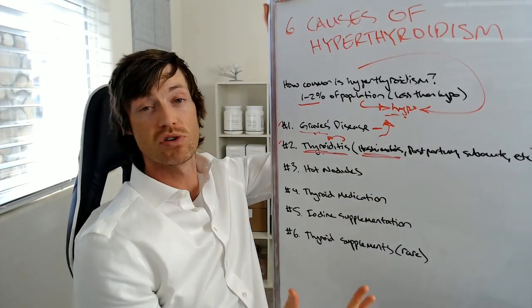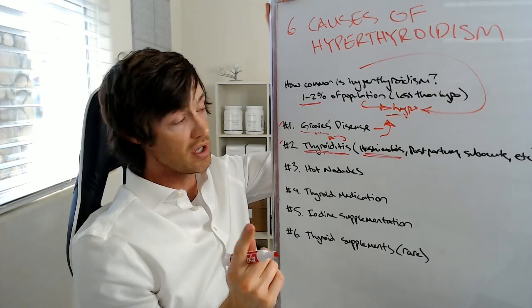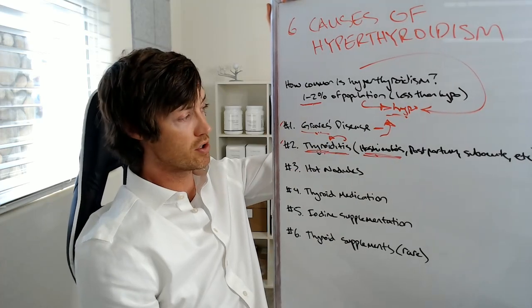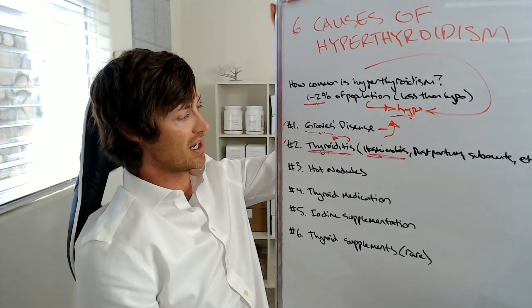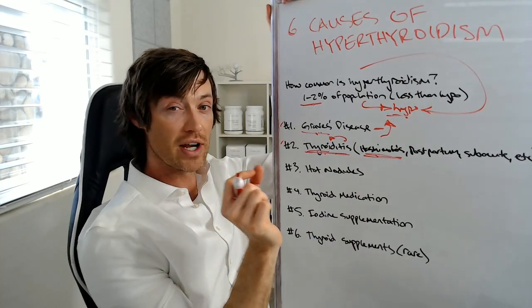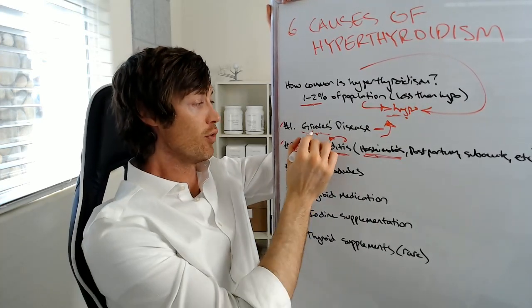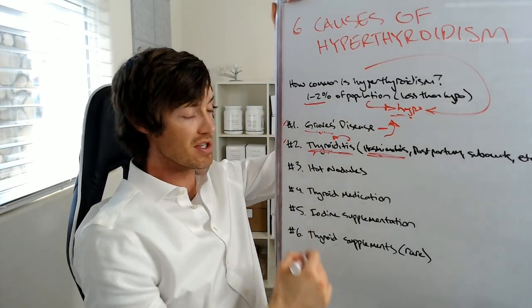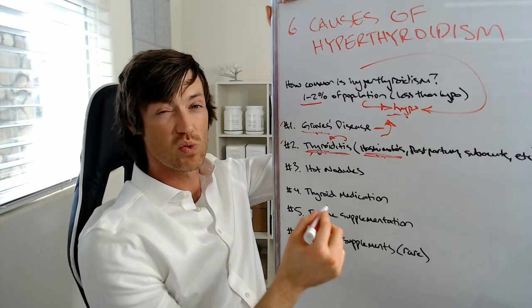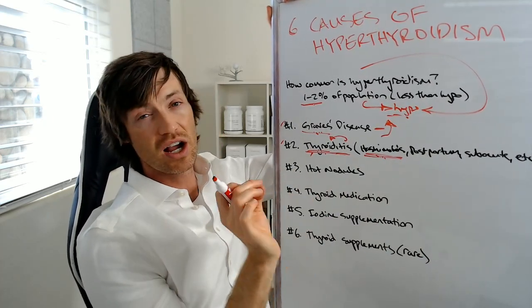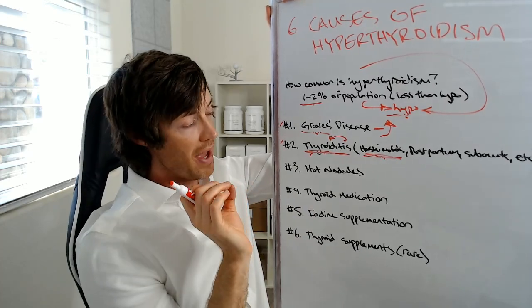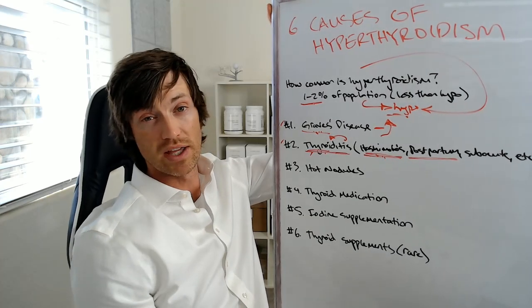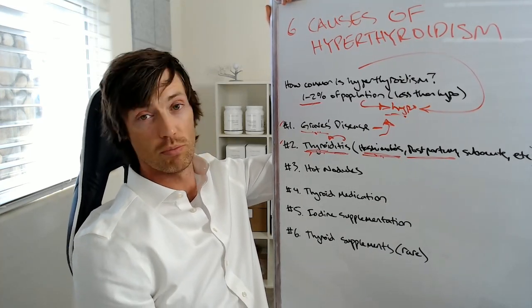So I included Hashimoto's thyroiditis in here as well. Remember, I said Hashimoto's causes low thyroid, and that is almost always true, but it can cause bouts of hyperthyroidism, meaning that your thyroid is temporarily too high for a short period of time. Now, I should have actually mentioned in the very beginning that all of these causes of hyperthyroidism vary in how long they actually last. Graves' disease usually doesn't go away. Thyroiditis usually does go away.